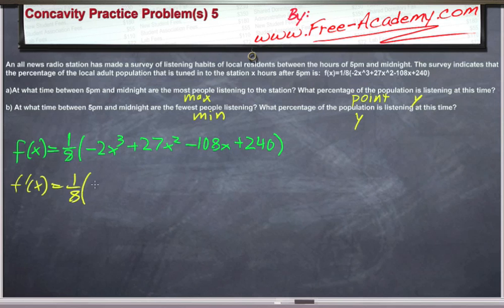Keep the one-eighth out in front, and we're going to get negative 6 x squared plus 54 x minus 108. And we'll set that equal to zero to get our critical points. And then we need to solve for x equals zero.